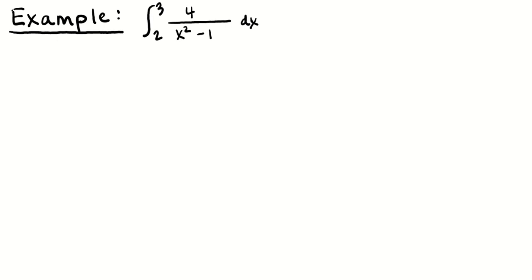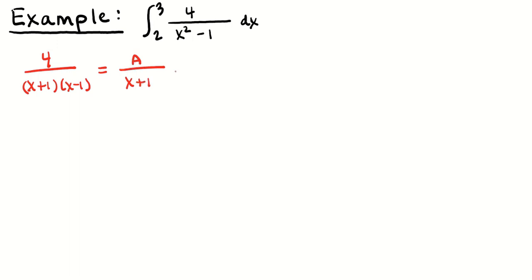Here's an example for you to try on your own: the integral from 2 to 3 of 4 over x squared minus 1 dx. You look at x squared minus 1 and say, hey, I know how to factor that — it's (x plus 1)(x minus 1). So say that 4 over (x plus 1)(x minus 1) equals some number A over x plus 1, plus some other number B over x minus 1. Pause the video, try to break this into partial fractions, figure out A and B, and then check your answer.